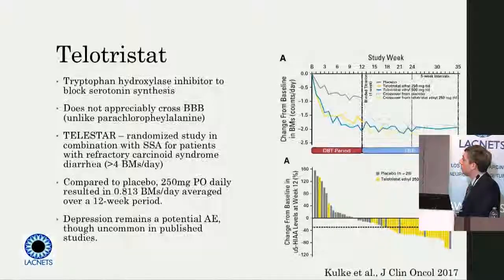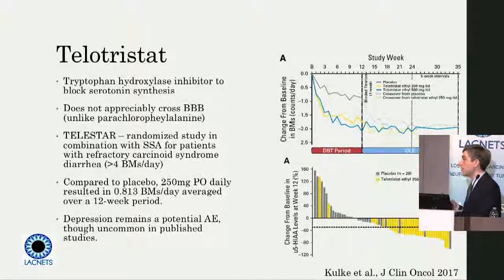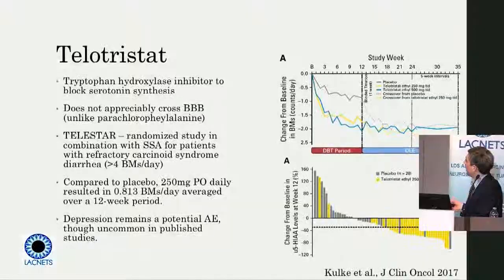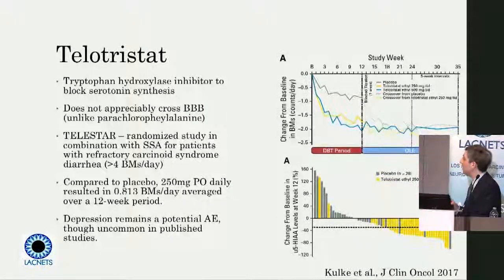Our most recent pharmacologic intervention — showing you that paying attention to all the biochemistry is worthwhile — is that if you specifically block tryptophan hydroxylase, which is the rate-limiting enzyme in the synthesis of serotonin from tryptophan, you can drop the 5-HIAA in the urine and diminish bowel movement frequency for patients with carcinoid syndrome refractory to somatostatin analog therapy. This drug is also FDA-approved for folks who have carcinoid syndrome refractory to somatostatin analog therapy, and it's used in combination.